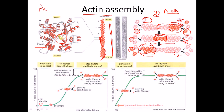This process is called treadmilling — like a treadmill, where you run but stay in place. If we start at a position, after further addition of actin at the plus end, the actin that was new becomes old actin and moves toward the minus end. That is what is going on all the time. Now let's talk about the assembly curve of actin.